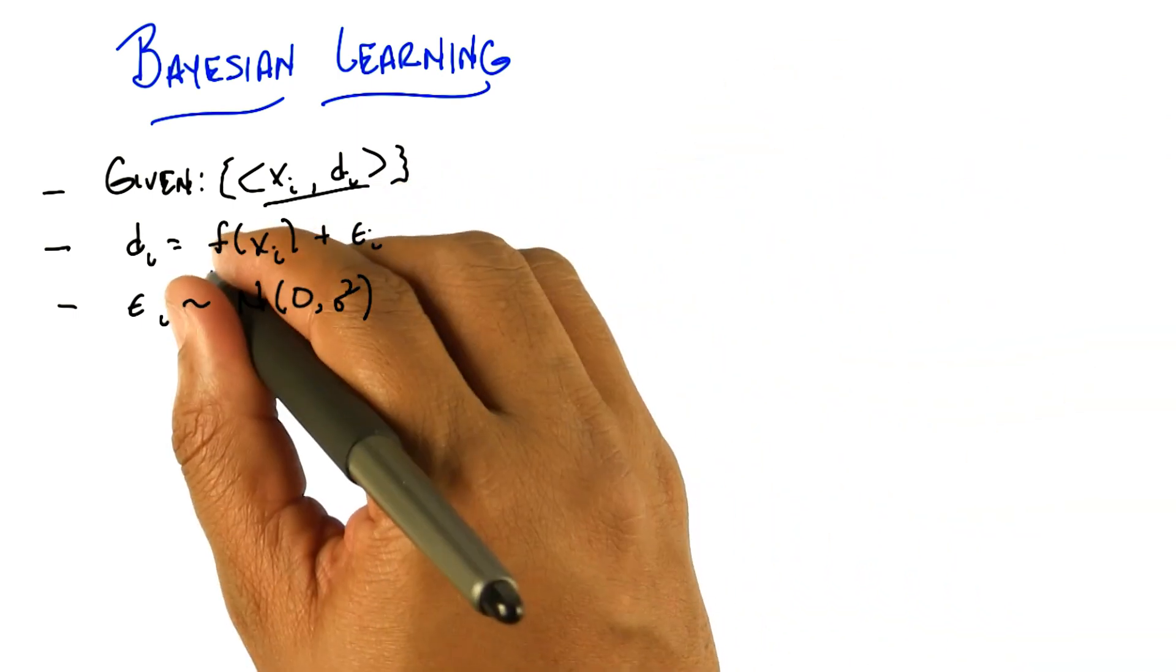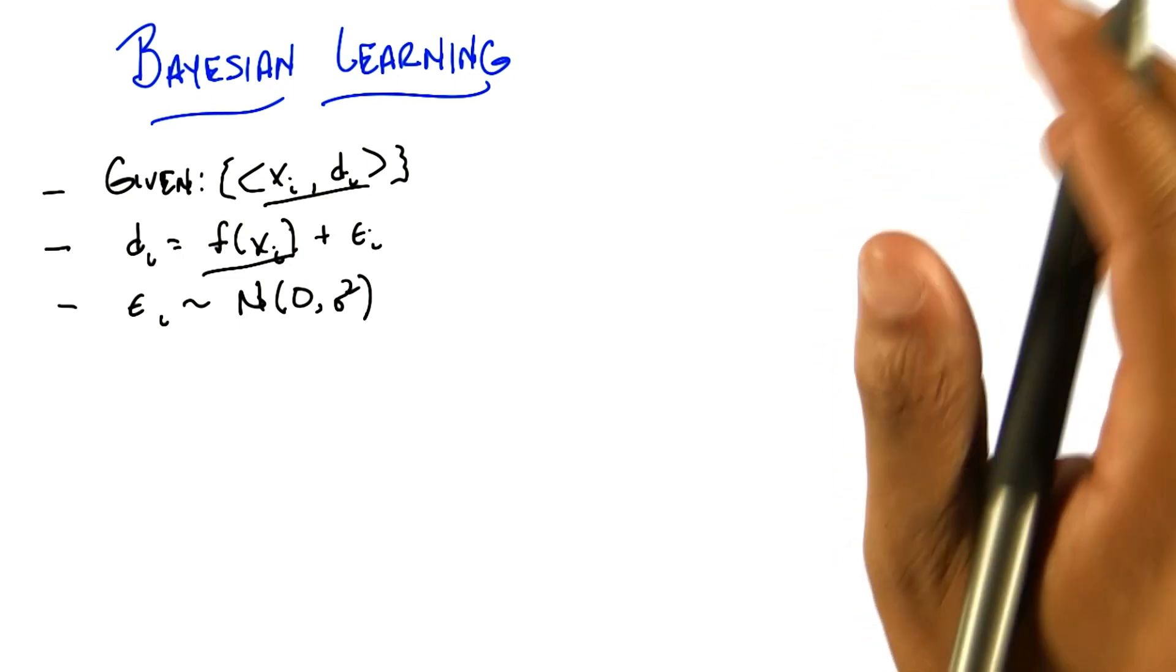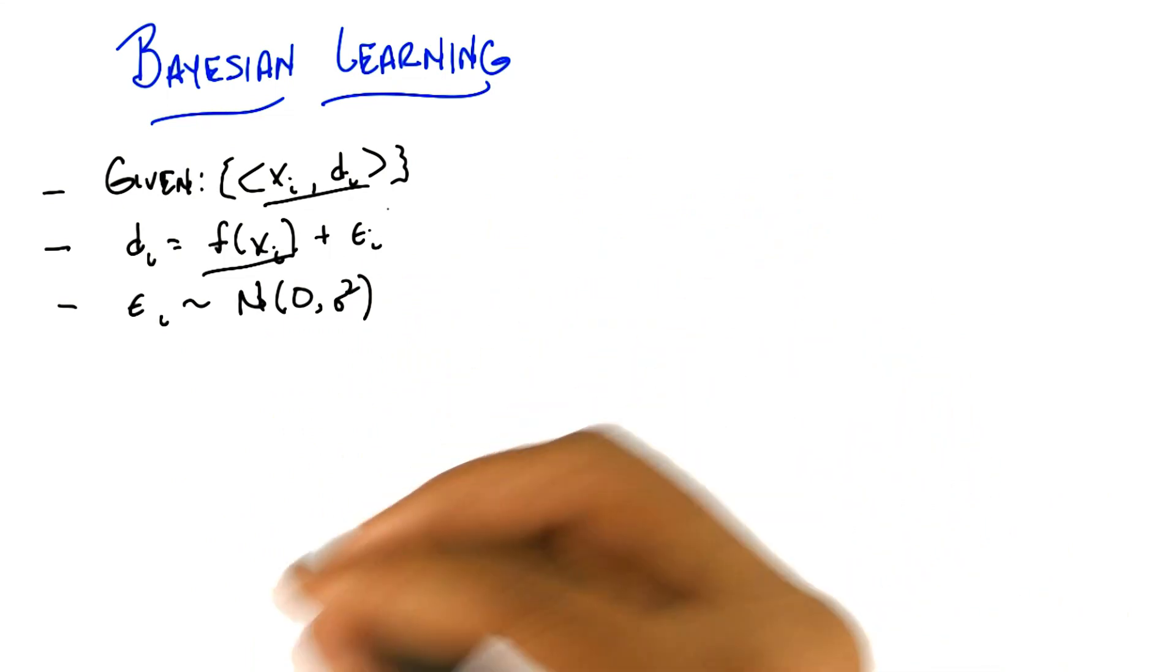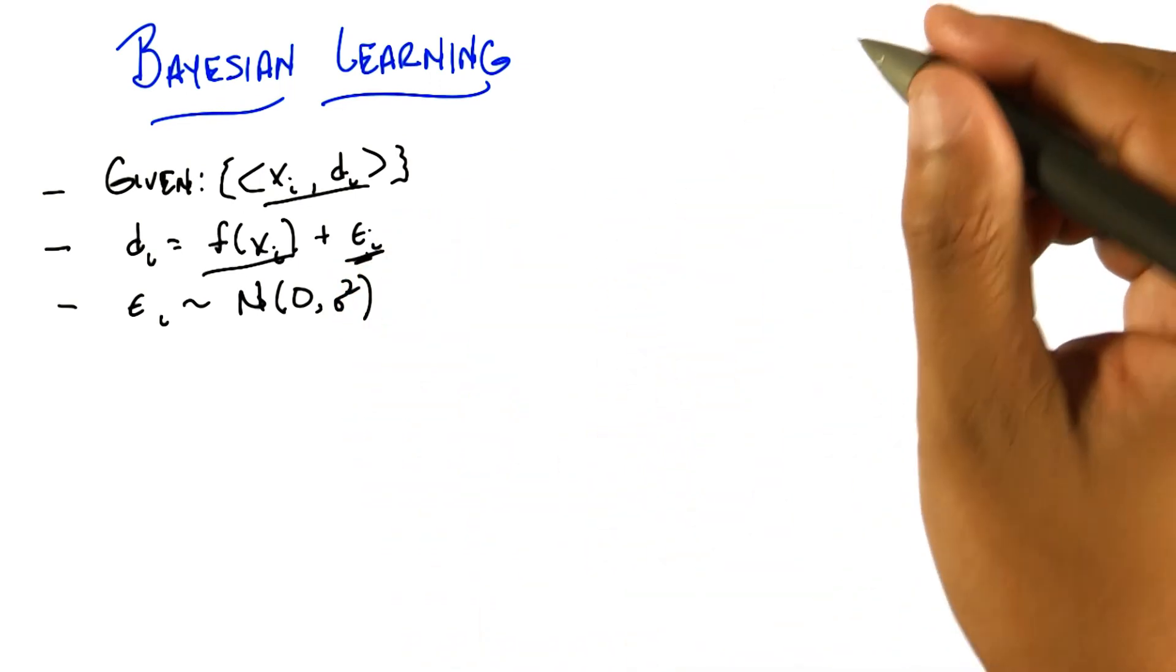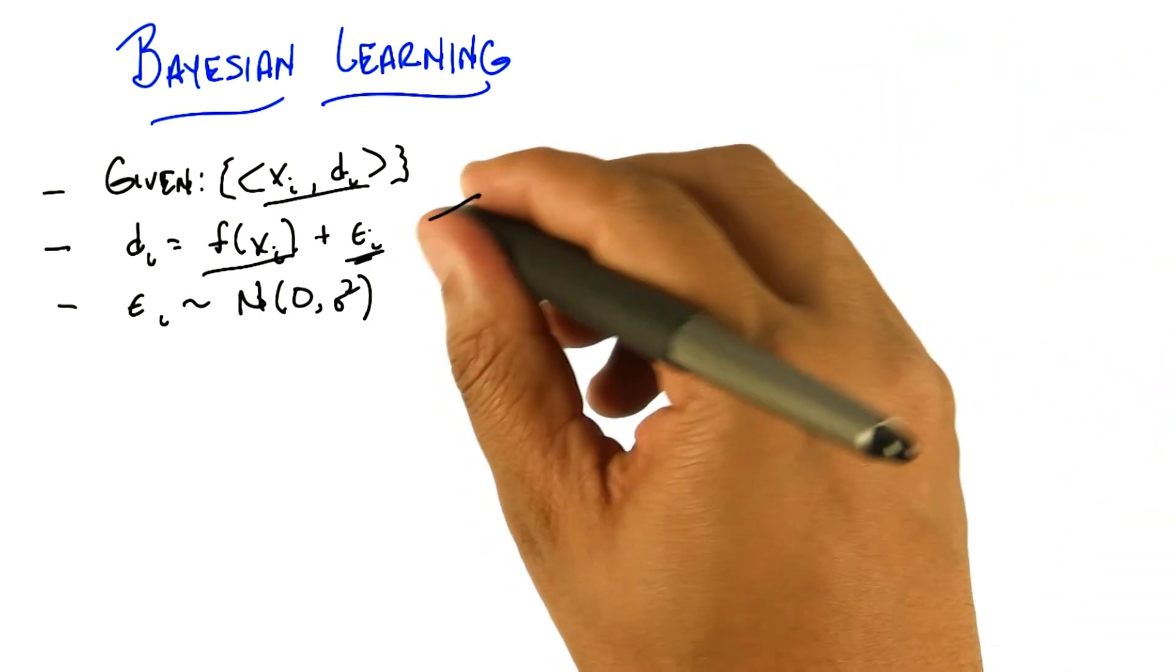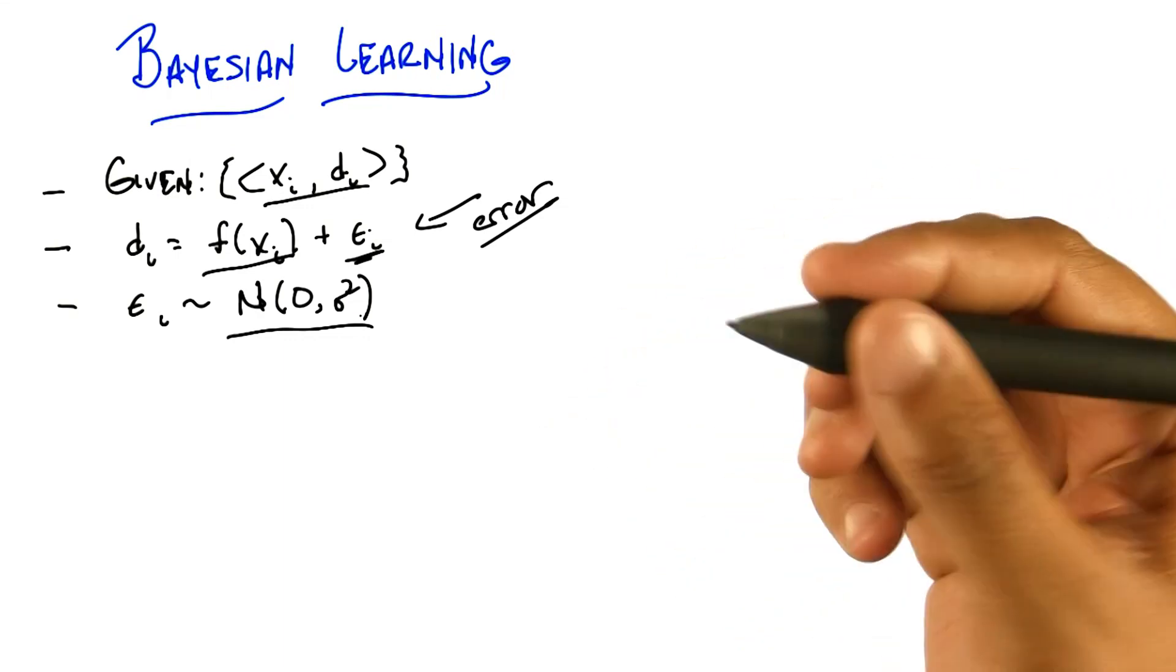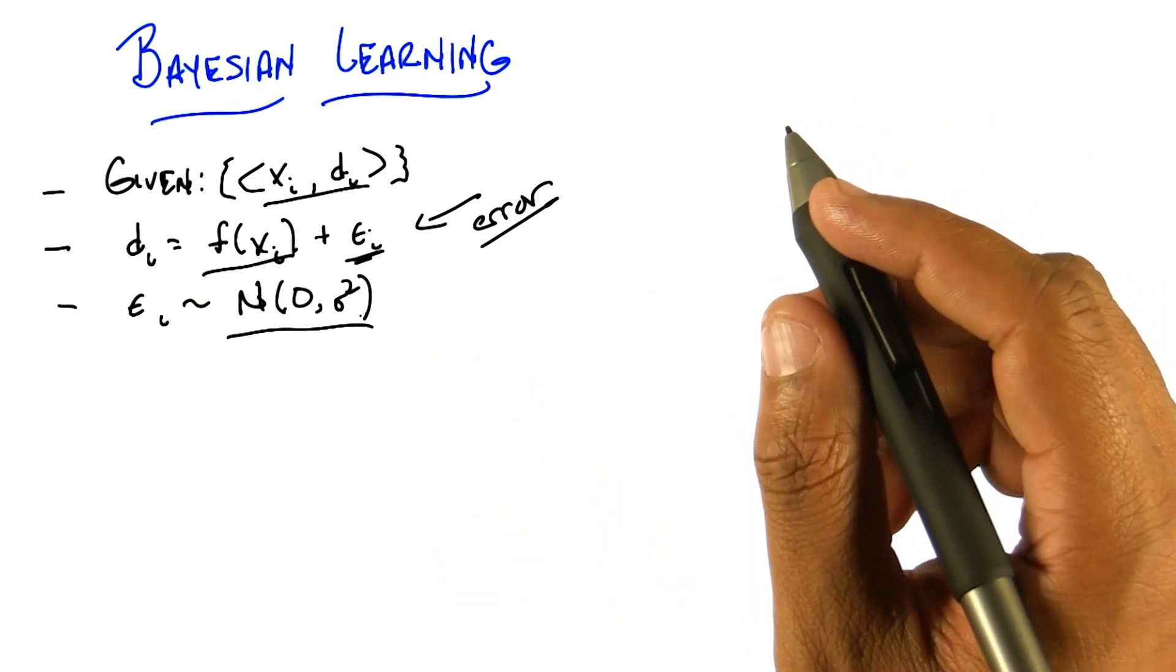So the di's are constructed from some deterministic function f that we pass the x's through. That's really what we're trying to figure out - what is the underlying f? But to make our job a little bit harder, we have noisy outputs. For every single di that is generated, there's some small error epsilon that is added to it. This particular error term is drawn from a normal distribution with zero mean and some variance.